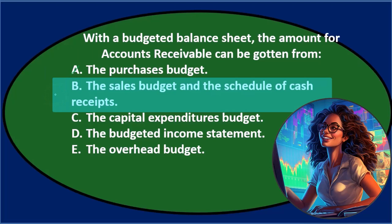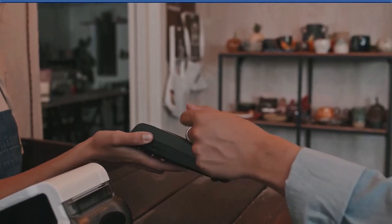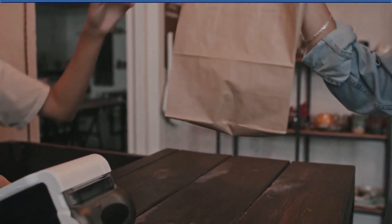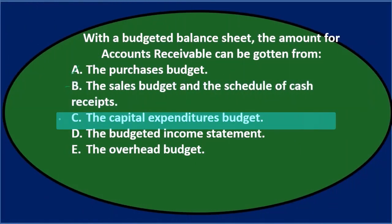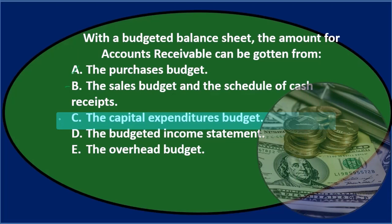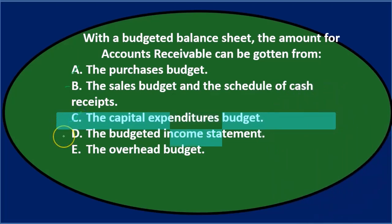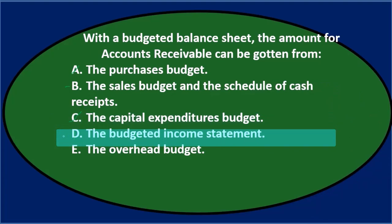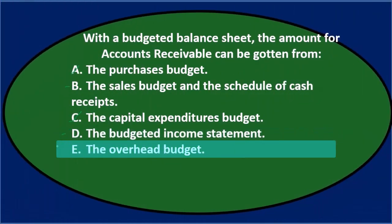Option B, the sales budget and schedule of cash receipts, sounds linked to receivables — we sell to customers and if not paid in cash, accounts receivable goes up, so that has possibilities. Option C, capital expenditures, is about spending money on property, plant, and equipment — not about people owing us money, so probably not C. Option D, the budgeted income statement, could be relevant since sales appears there. Option E, the overhead budget, doesn't relate to receivables, so we can eliminate that.